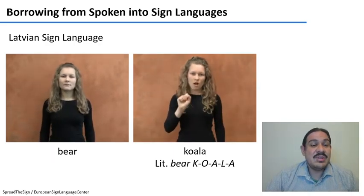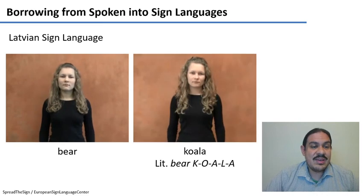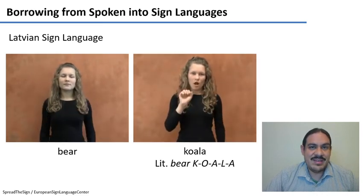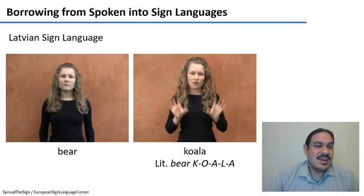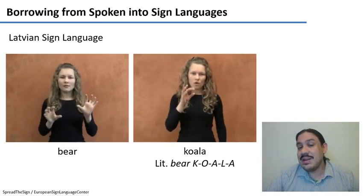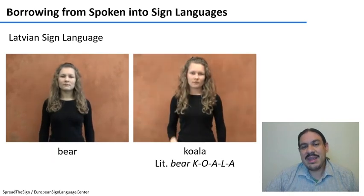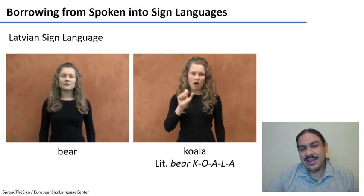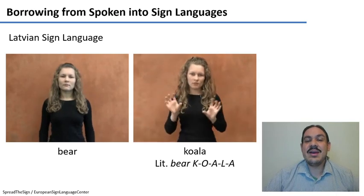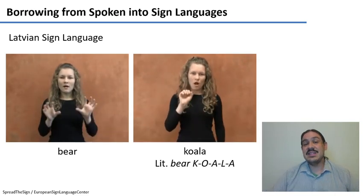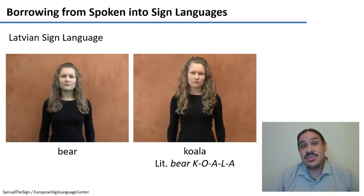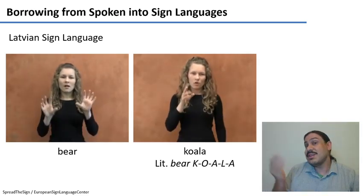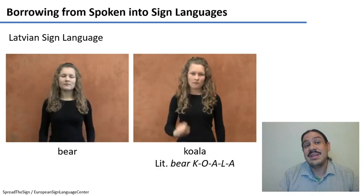For example, on the left we have the example of bear in the Latvian sign language, and the word for koala on the right is fingerspelled K-O-A-L-A. So you can see how fingerspelling adds additional information and provides a way to borrow a word that might not have existed before in the Latvian sign language.